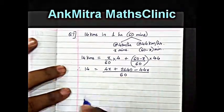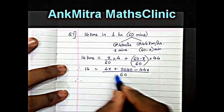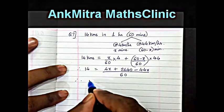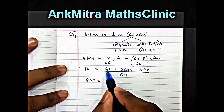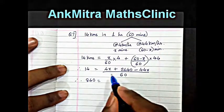The next step will be taking 60 to the other side, so 60 multiplied by 14 is 840 is equal to 4x minus 44x, that is,